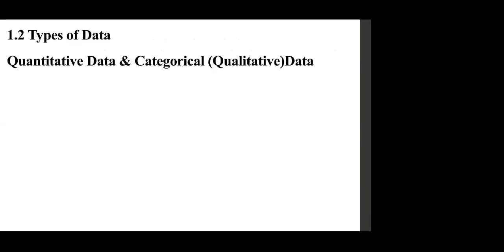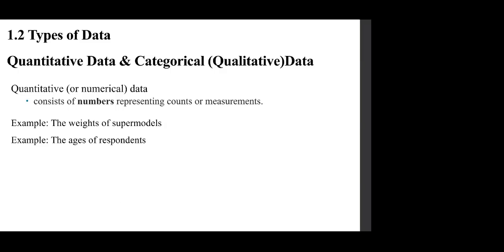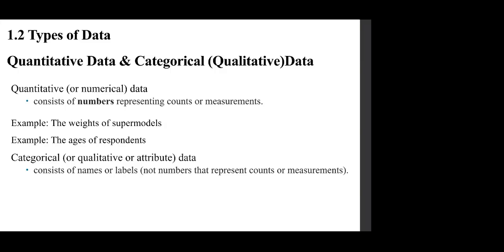Quantitative or numerical data consists of numbers representing counts or measurements — examples are weights or ages. Categorical, qualitative, or attribute data consists of names or labels, not numbers that represent counts or measurements. An important distinction: zip codes and student IDs are numerical but represent a category, so they are qualitative.